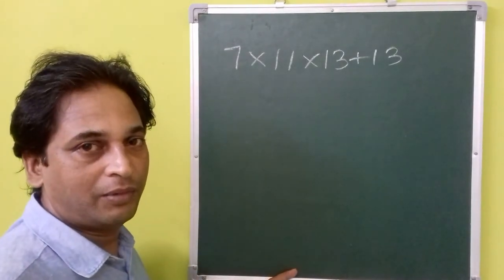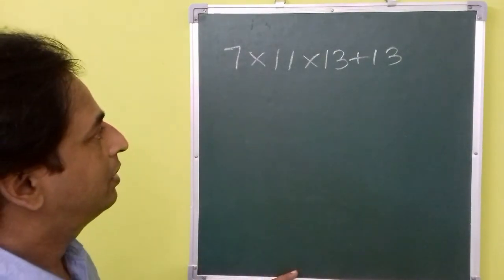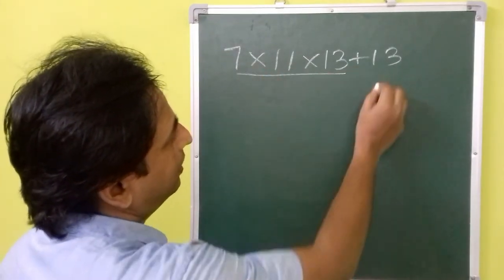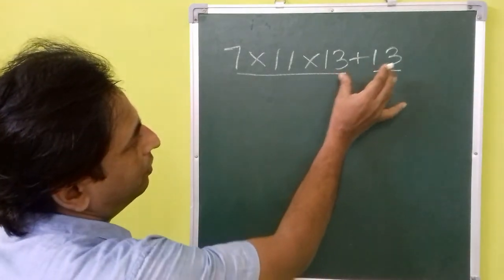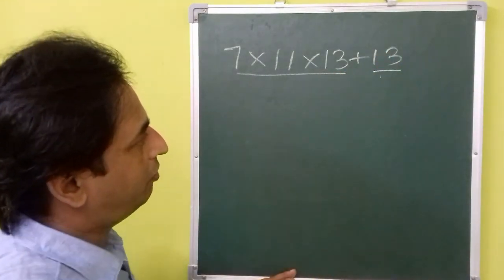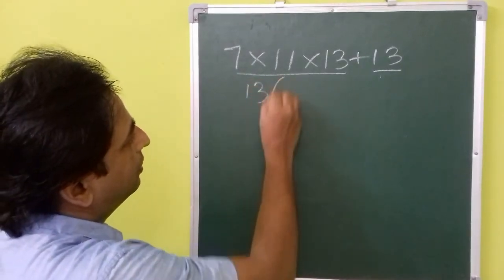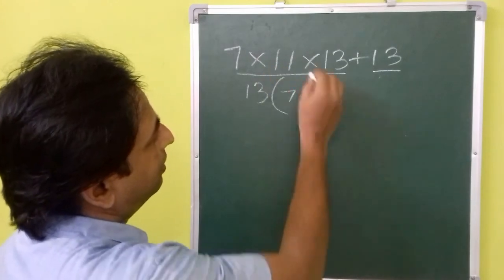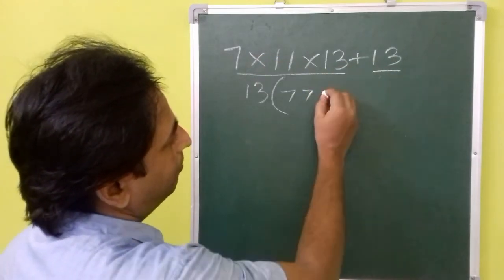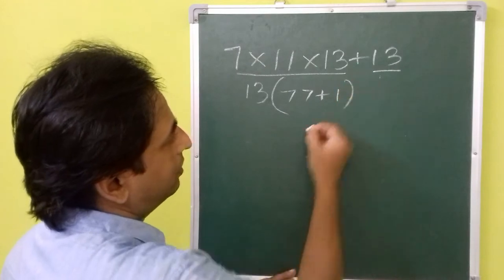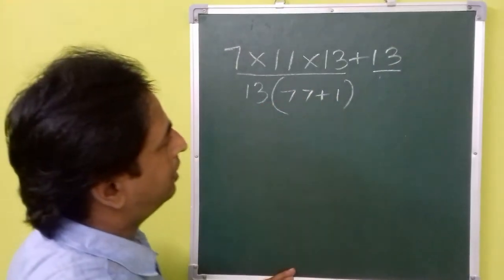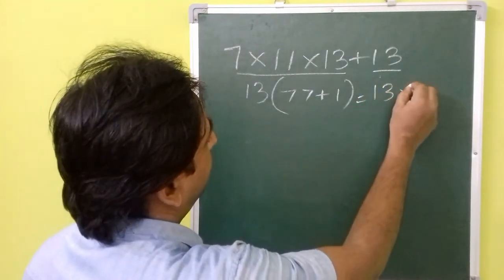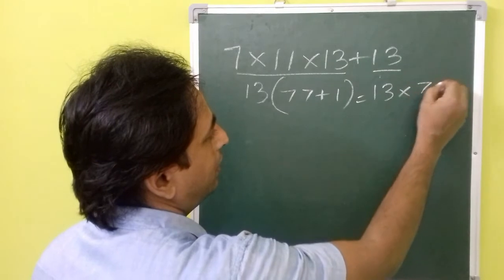We can use the fundamental theorem of arithmetic to prove it. So first of all, let us take the common thing out. Here this is one term and this is another term. In both we have 13 as a common factor, so let us take it out. Then we are going to get 7 into 11, that is 77 in this term, and plus 1 here because 13 is taken out. So we will get 1. That means 13 multiplied by 77 plus 1 is 78.